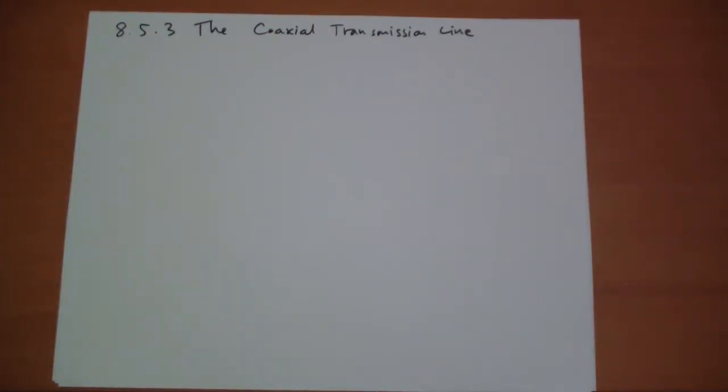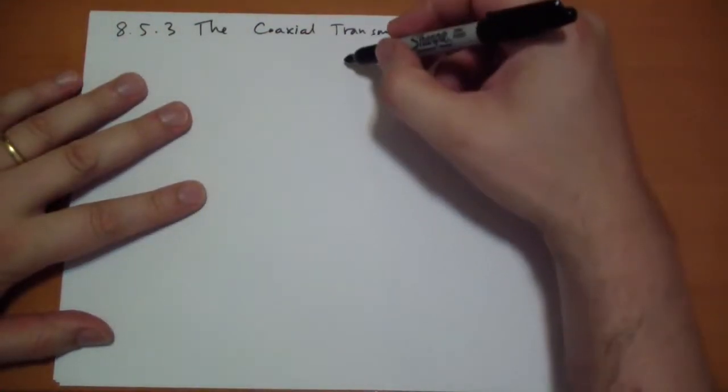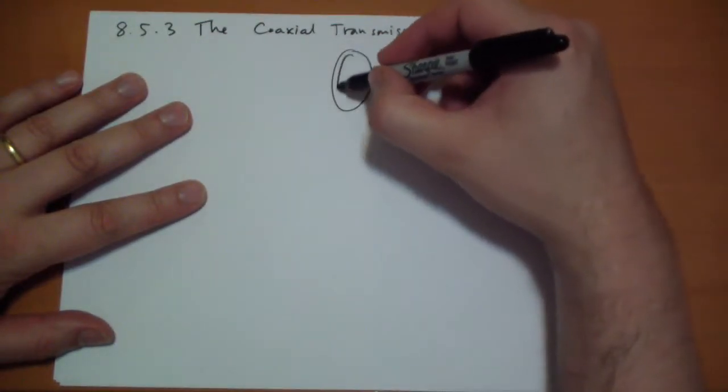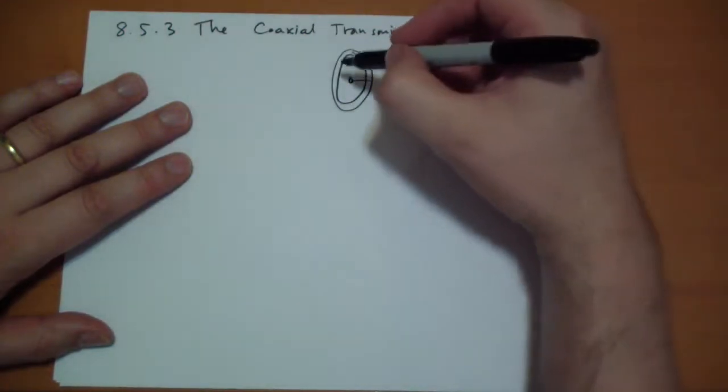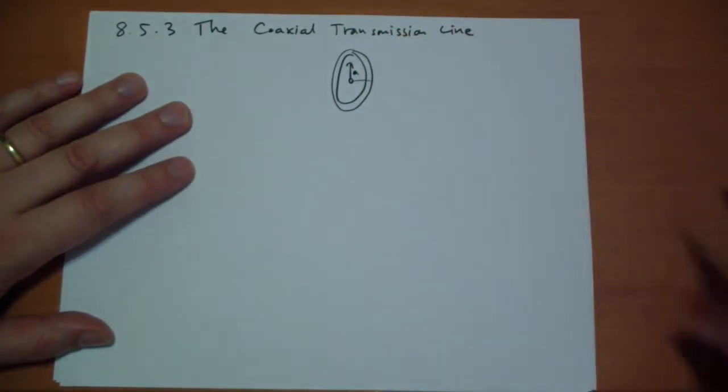So what happens when we put a wire inside of a waveguide? Let's imagine that we have a cylindrical waveguide and we stick a conductor down the middle. So it has some radius A.